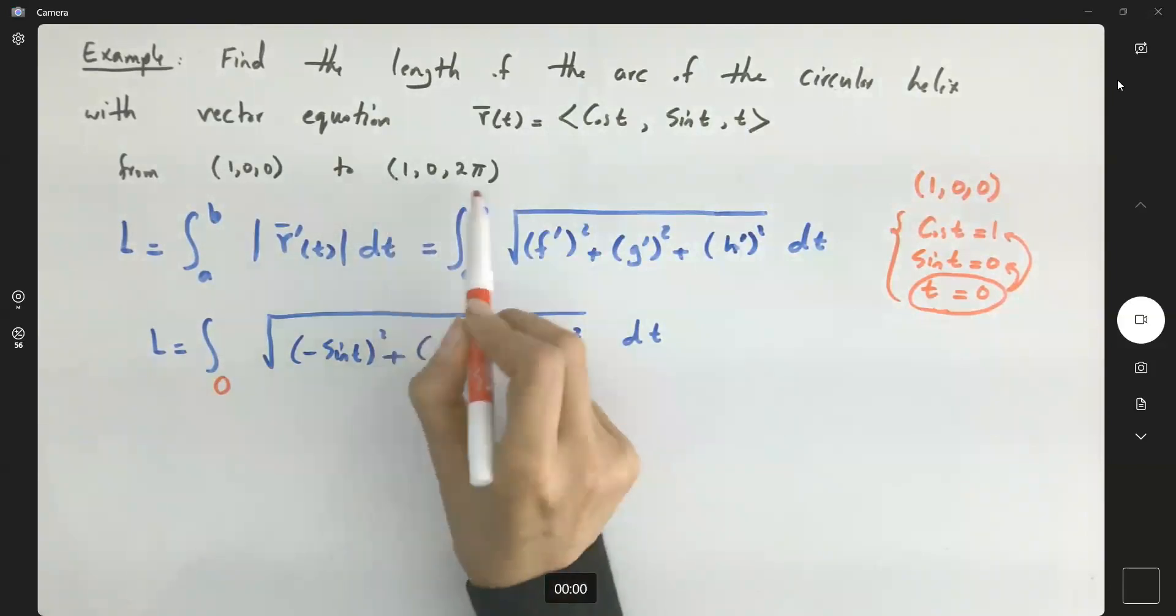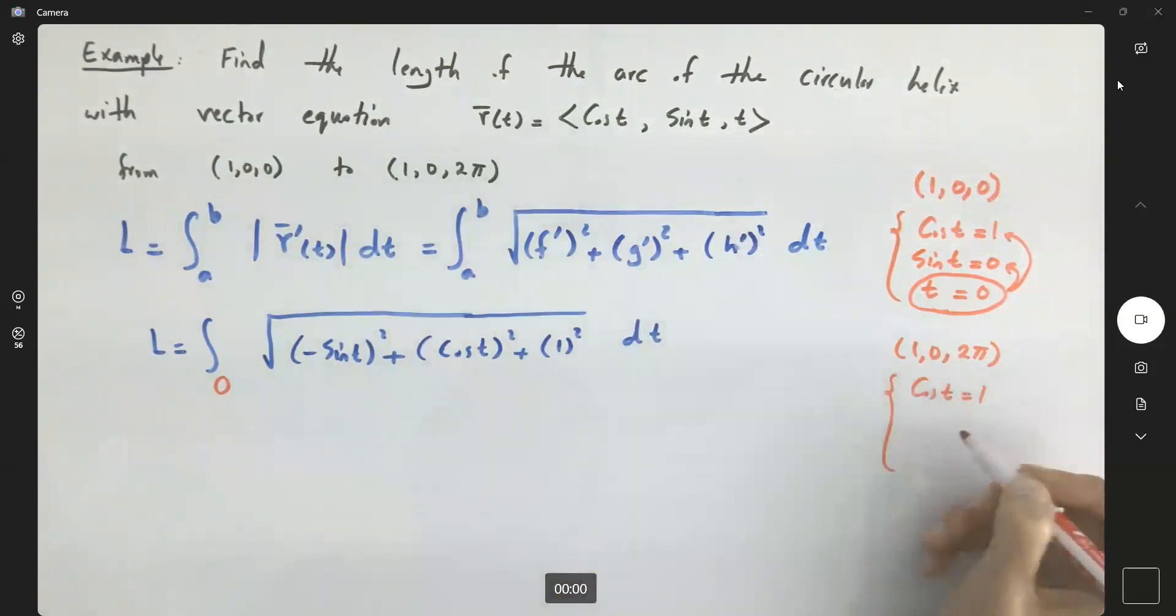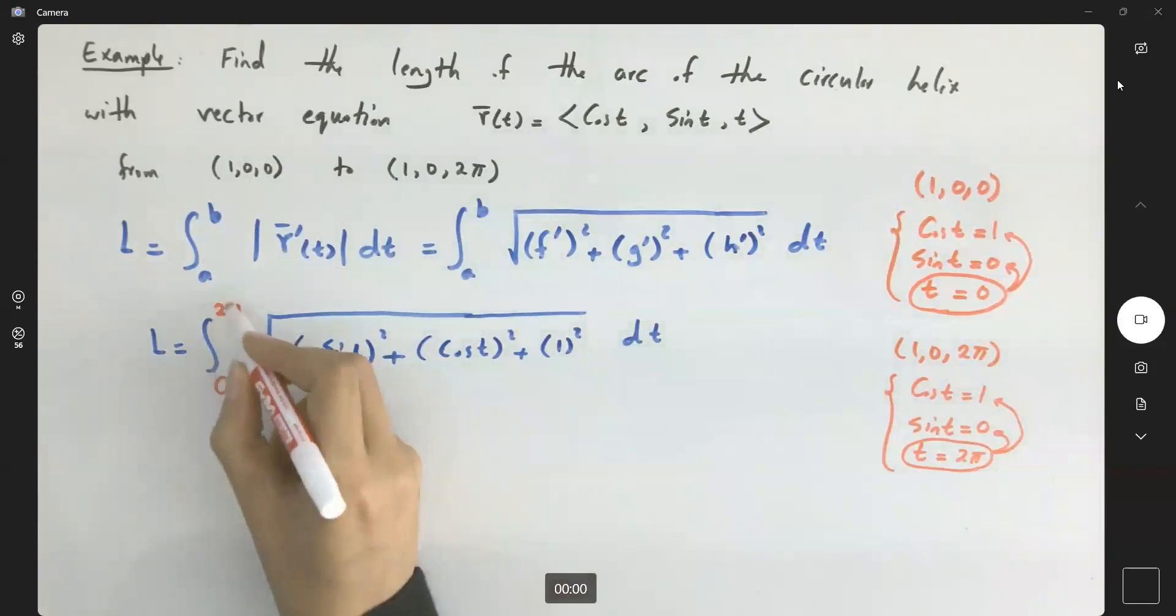Now it says the terminal point is (1,0,2π). Okay, cosine t is equal to 1, sine t is equal to 0, and t is equal to 2π. Again, if you plug this into the previous two equations, it satisfies these two equations. So the terminal point is 2π.